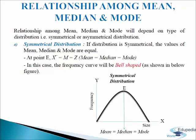Next we come to the relationship among mean, median and mode. This relationship will depend on the type of distribution — that is, symmetrical or asymmetrical distribution. First, we will discuss symmetrical distribution. If the distribution is symmetrical, the values of mean, median and mode are equal, and the frequency curve will be bell-shaped. As you can see in the diagram, mode touches the peak of the curve indicating maximum frequency, median divides the area of the curve into two equal halves, and mean is the center of gravity.